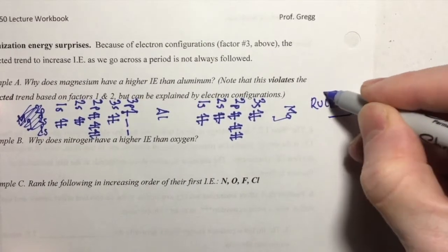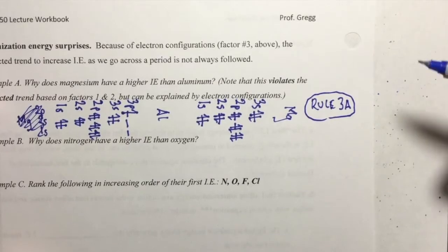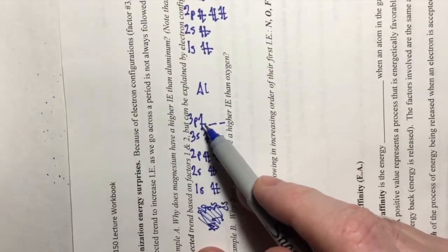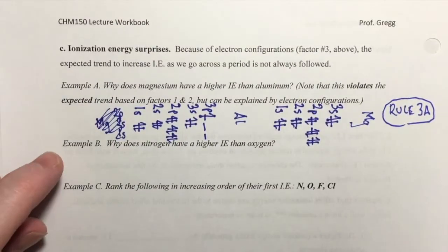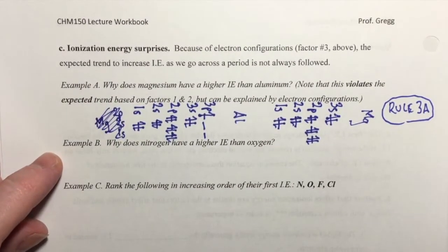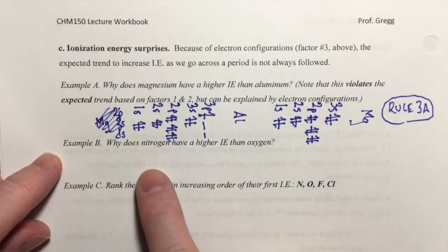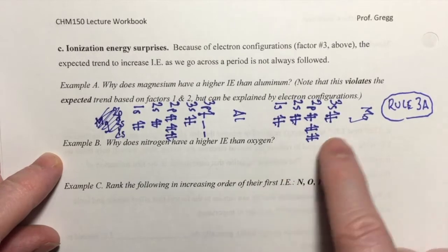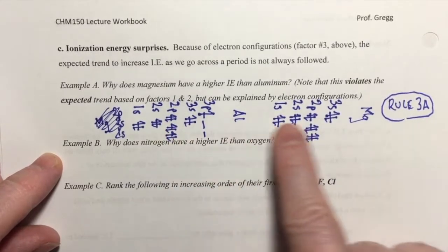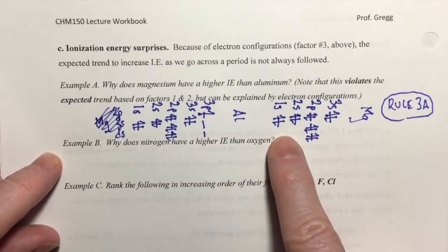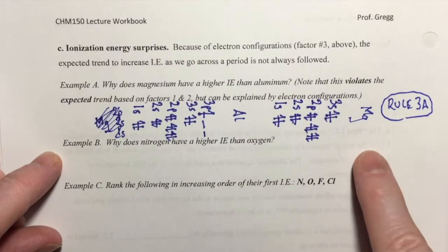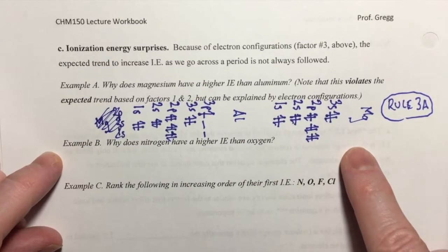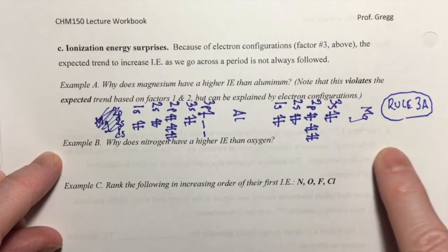Rule 3a explains why magnesium has a higher IE than aluminum: an electron in a higher subshell will be easier to pull away and therefore has a lower IE — and that's aluminum's 3p electron. For example problem B, pause the video, draw the electron configurations, and see if you can answer the question. When you're finished resume the video and I'll work through the answer.